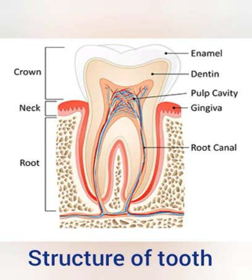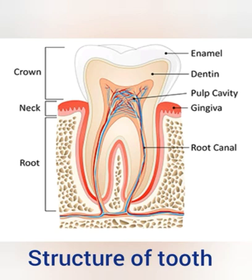Second is the dentine. Below the enamel there is a bone-like structure called dentine, which is very hard. Next is the pulp cavity. Below the dentine there exists a hollow space filled with nerves and blood vessels, which we call the pulp cavity.